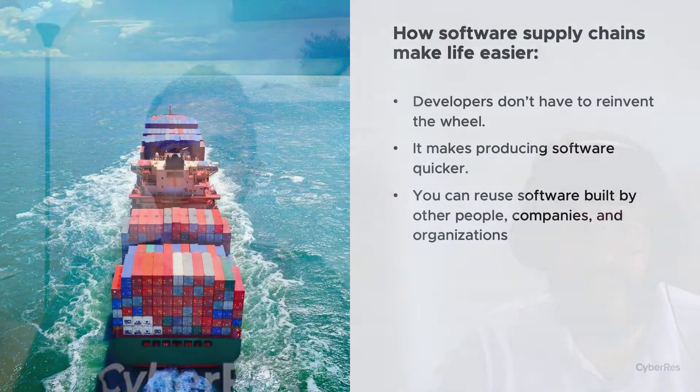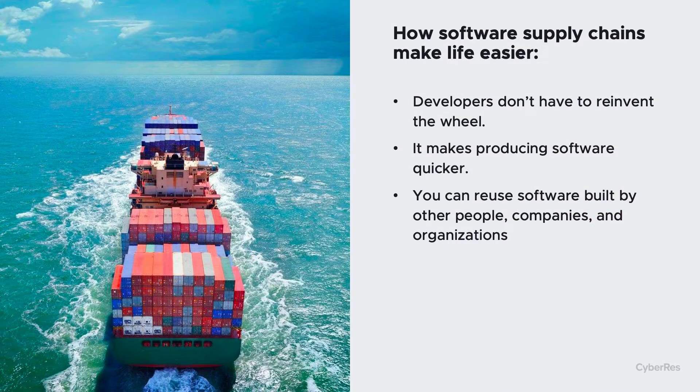So if I'm understanding this correctly, the software supply chain essentially makes it easier for developers to build software rather than reinventing the wheel or building something from the ground up — they're able to pull in existing components to make their lives a little easier. Is that correct? Yeah, and it makes the process faster, because I think that's the main goal with development today: make releases go out quicker and faster.